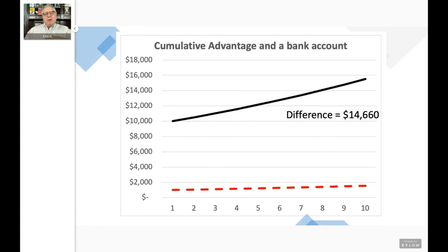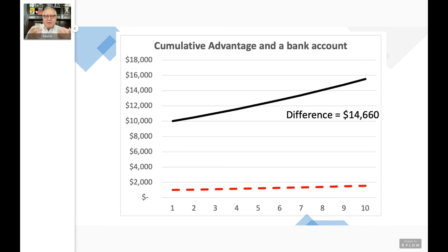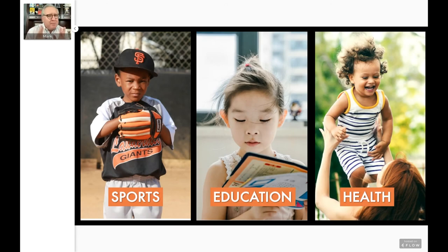In the world of sociology, one of the most common examples used to illustrate this is a bank account. Let's say someone starts out with $1,000 in their bank account, another person has $10,000, and they both get a 5% interest rate. Of course, at the beginning, the difference is $9,000. But over 10 years, that expands to almost $15,000, and the gap will never close. So it's this idea that once you have momentum, the gap between you and your competitors keeps increasing. But it's not just about money — it's about any advantage you have in your life and career.